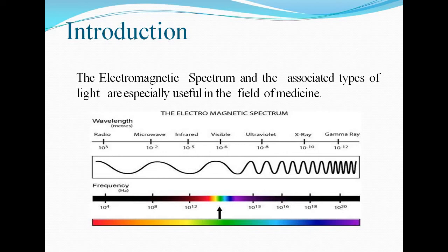Introduction. Here the figure showing the electromagnetic spectrum and the ranges of X-ray, gamma ray, ultraviolet ray, visible light, etc. in terms of frequency and wavelength.